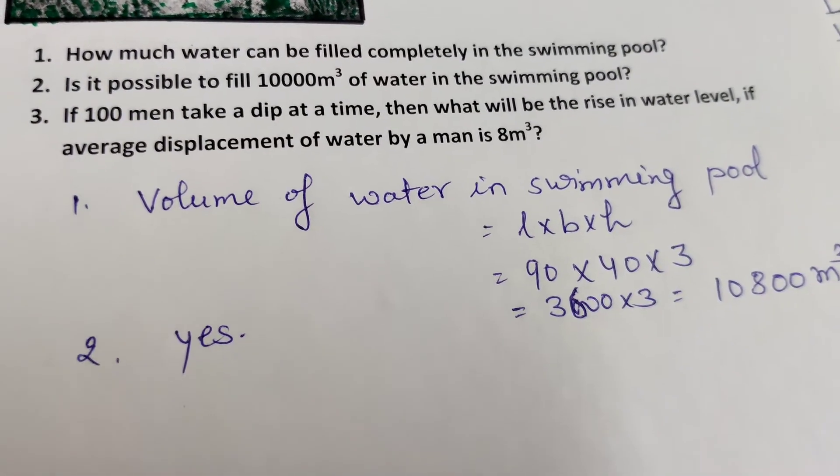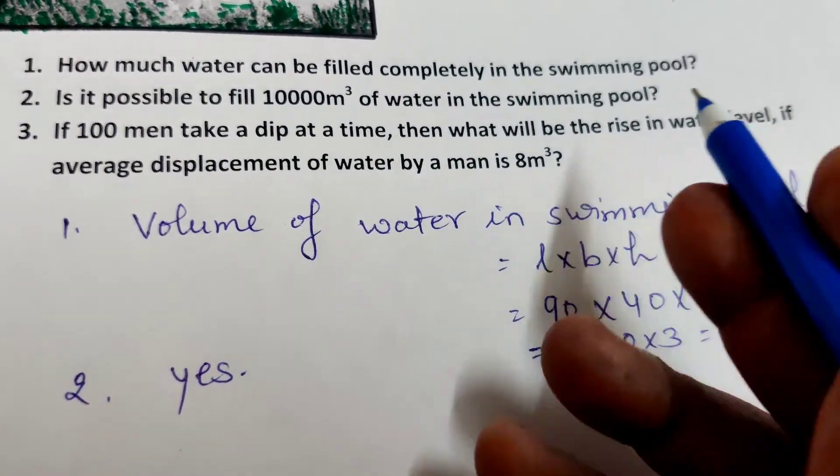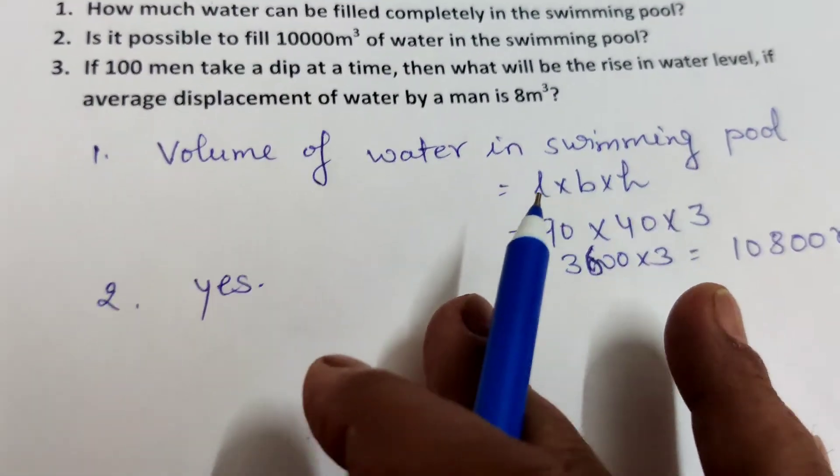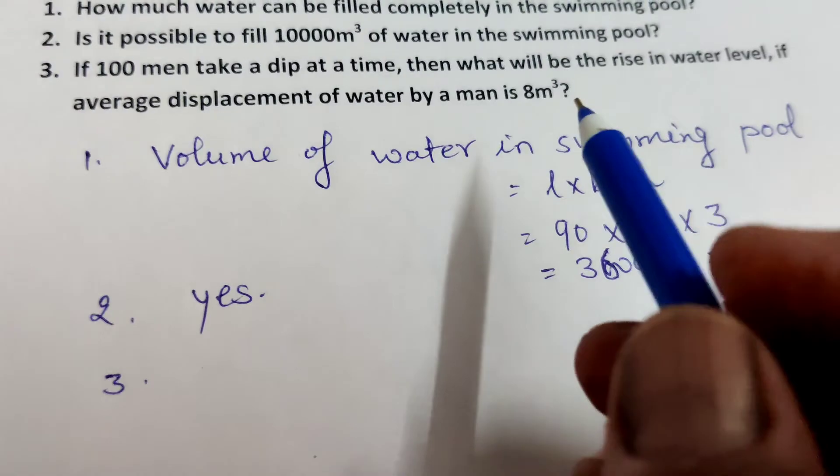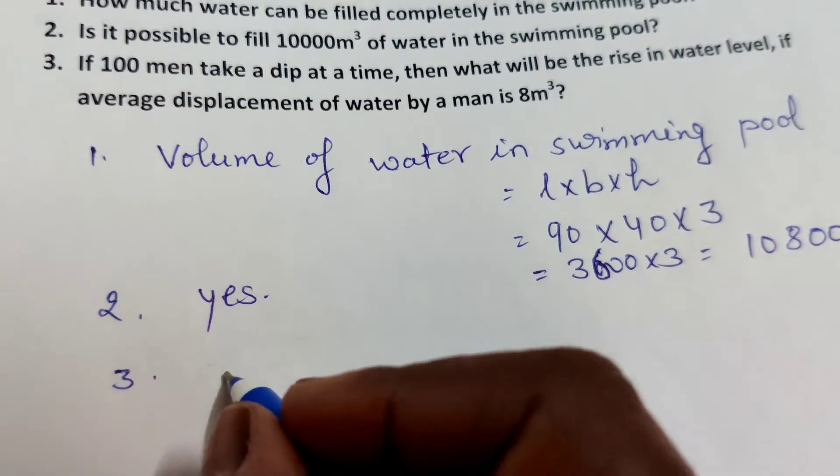Question three: If 100 men take a dip at a time, then what will be the rise in water level if the average displacement of water by a man is 8 cubic meters? Number of men is 100, and one man can displace 8 cubic meters of water.